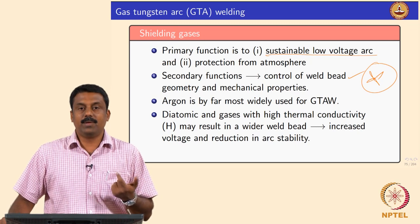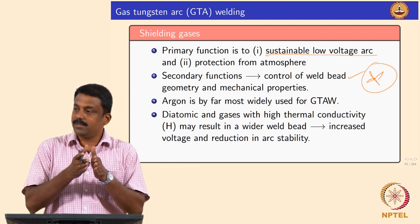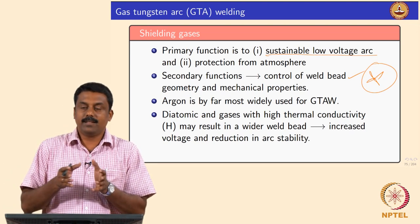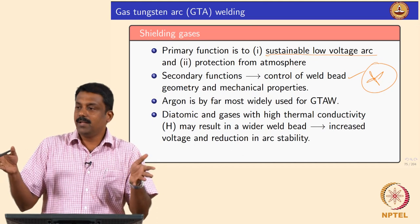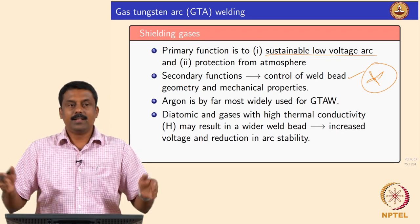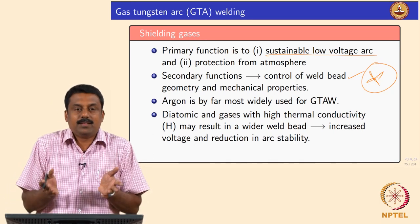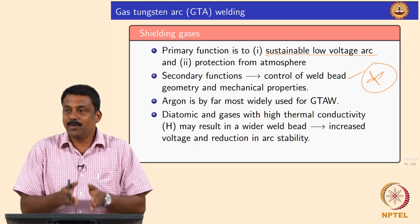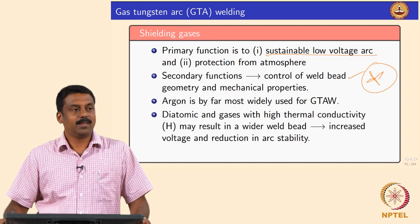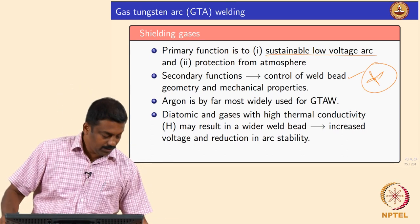Generally, diatomic gases and gases with high thermal conductivity result in a wider bead because of effective heat transfer. Diatomic gases transfer heat via de-dissociation, while high thermal conductivity gases transfer heat by effective buoyancy flow. During this process, if the arc temperature widens, you also increase the voltage in most cases because the current flow is diverted, and you end up increasing the system voltage as well.